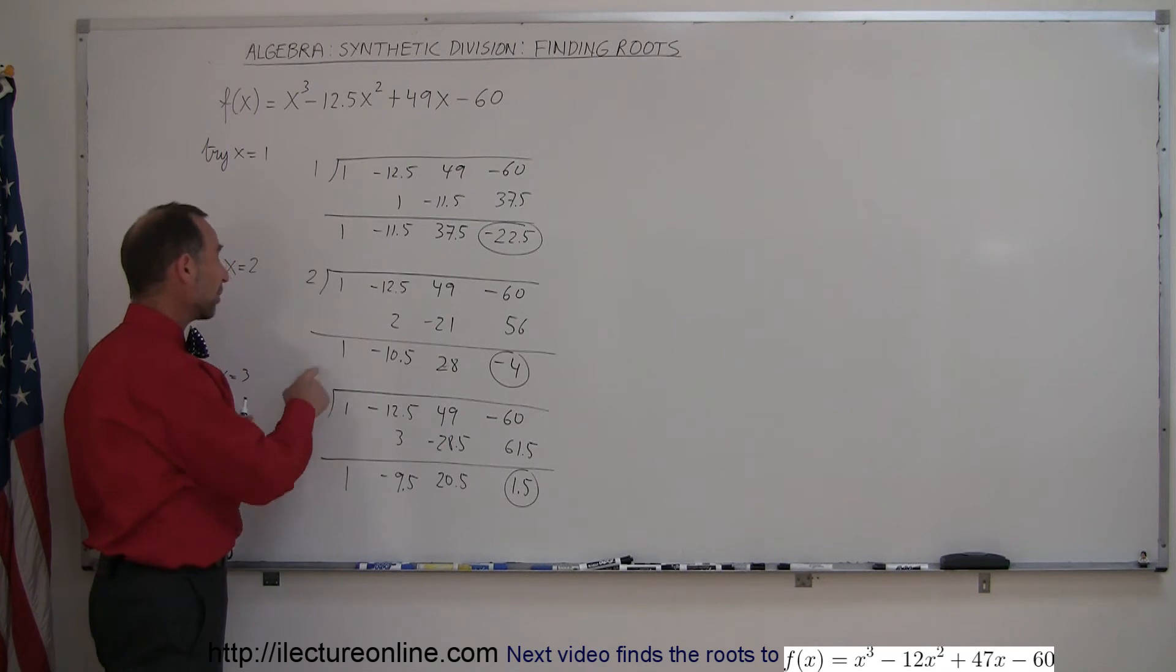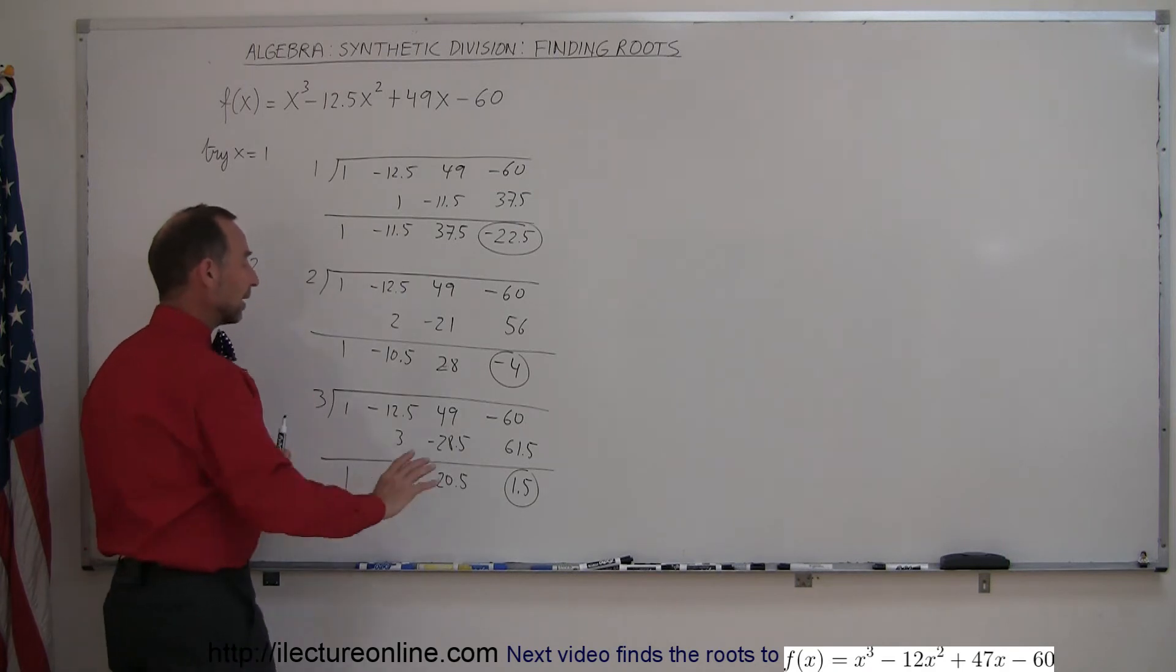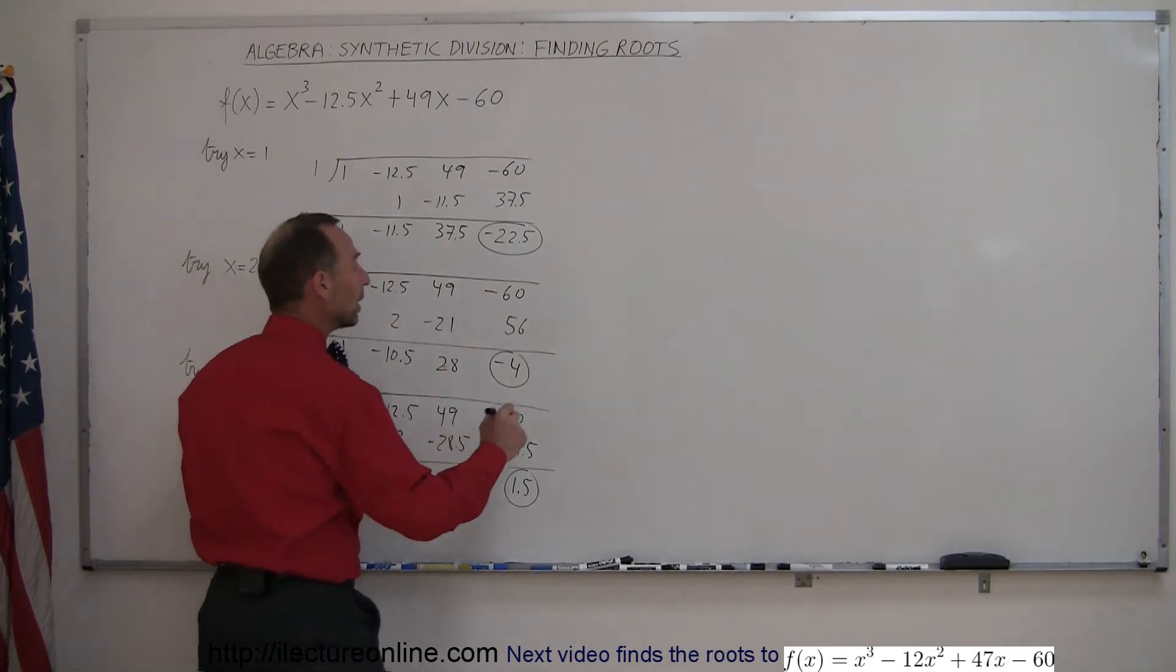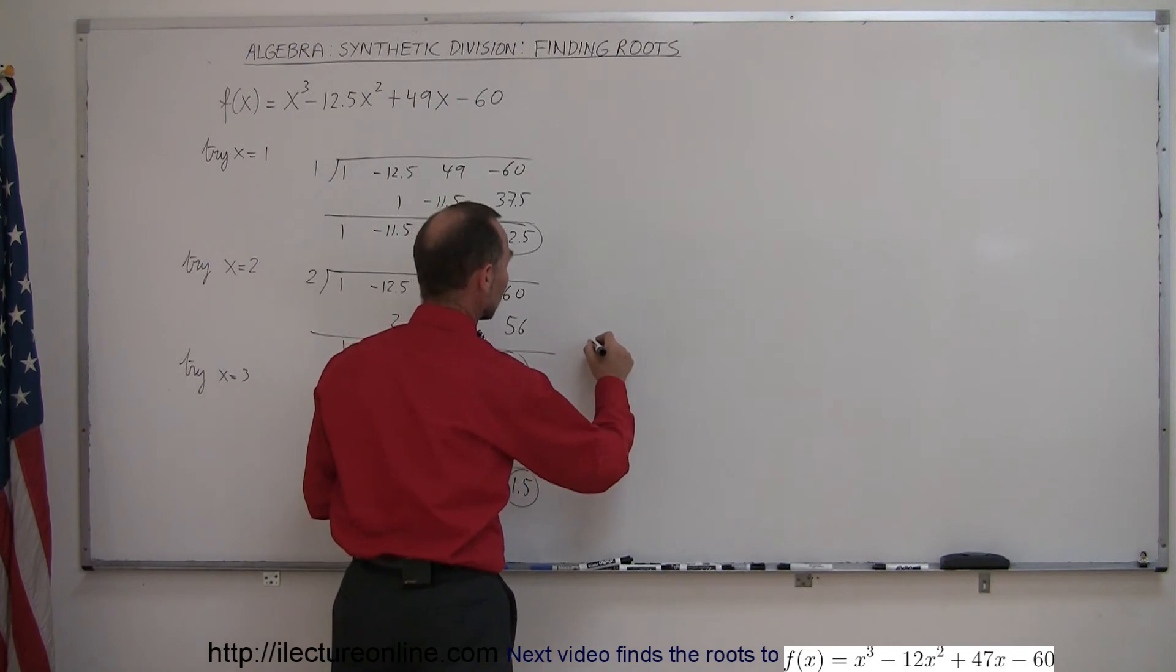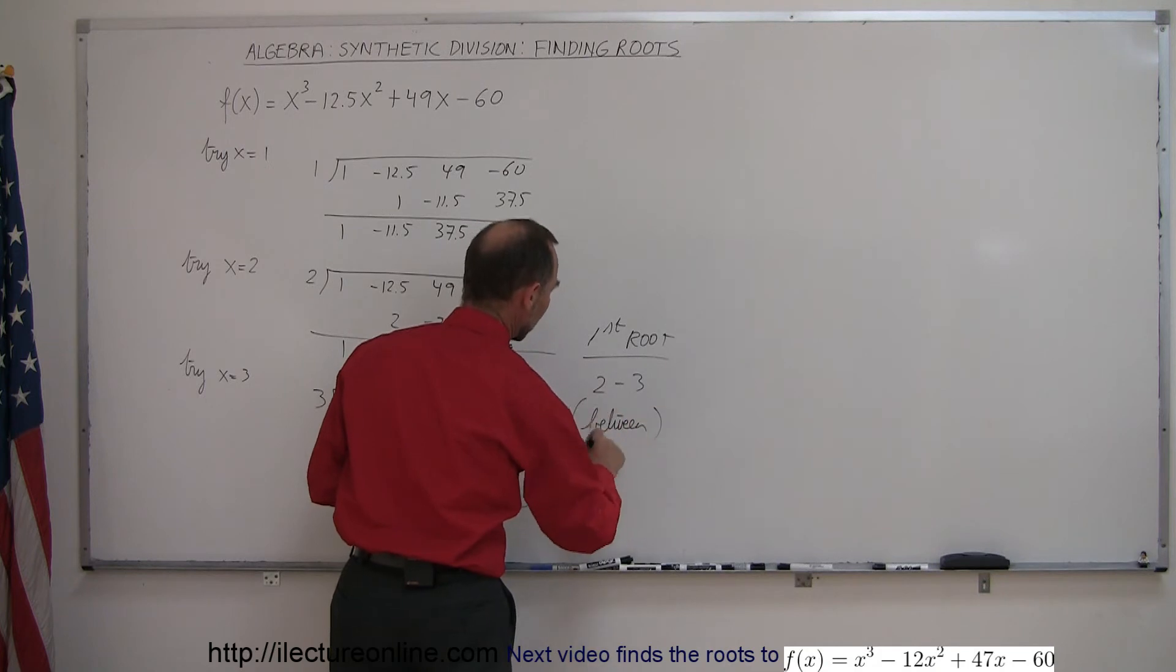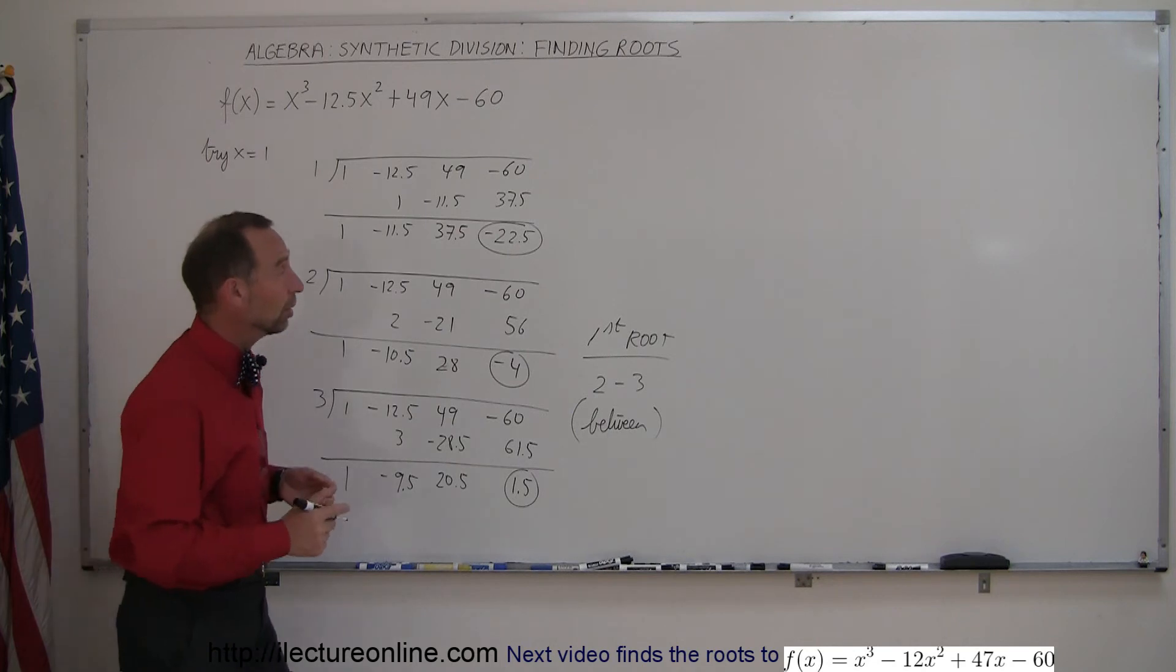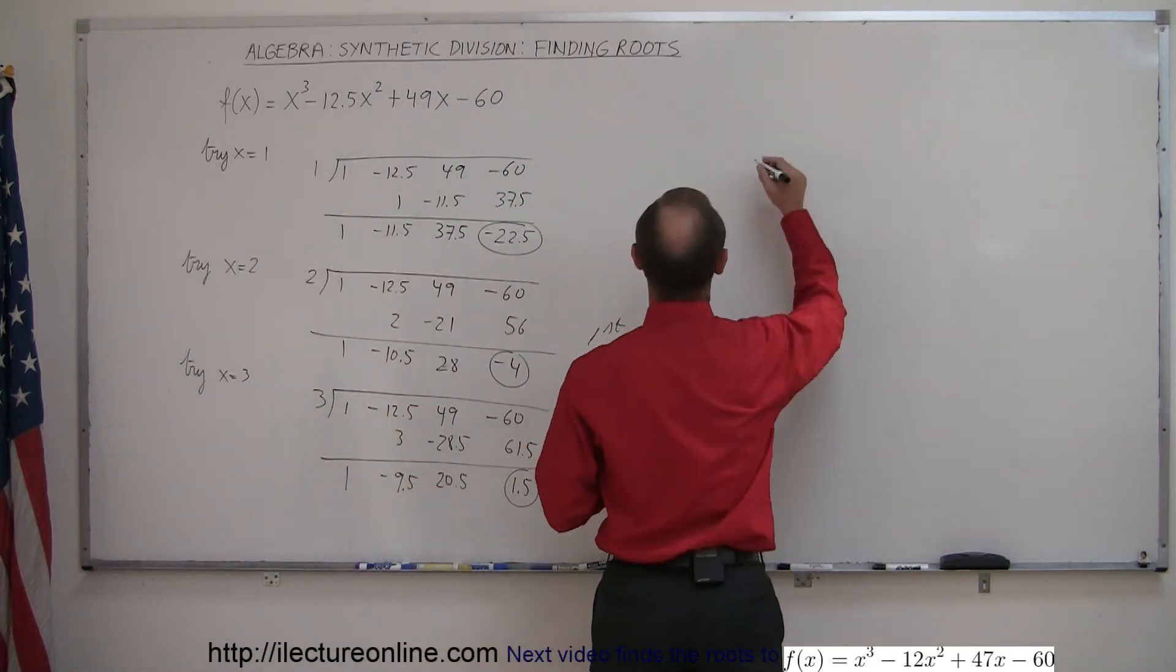The real root is somewhere between 2 and 3. What we could then do is try 2.1, 2.2, 2.5, some other number, but at least this helps you get into the ballpark. It tells you that the actual root is somewhere between 2 and 3. We could continue the process by trying 2.5 and see if that helps. Let's just do that.